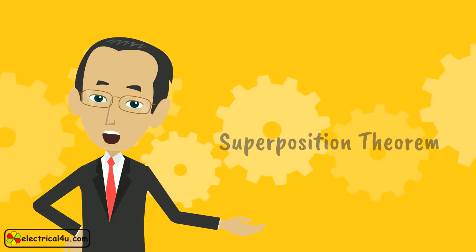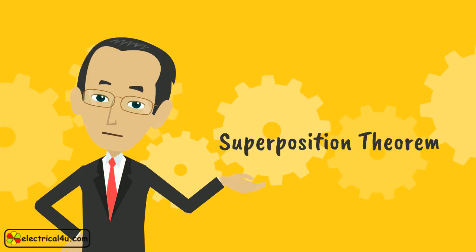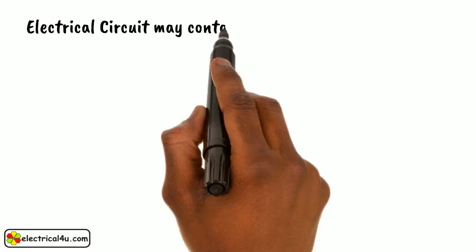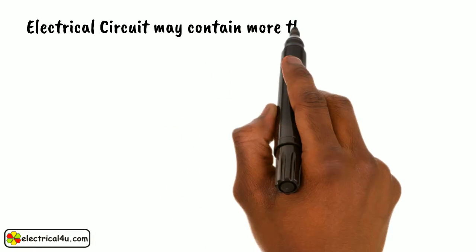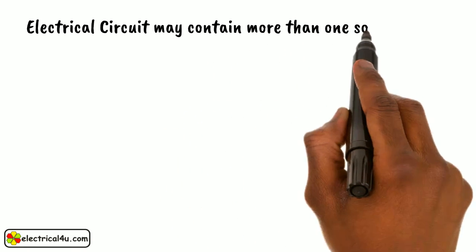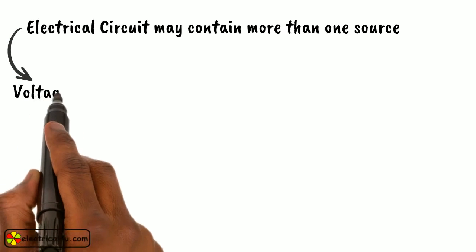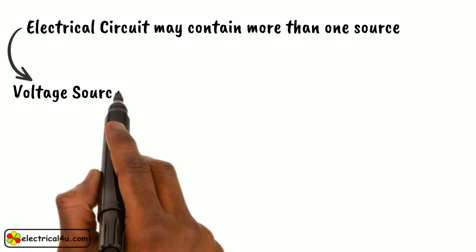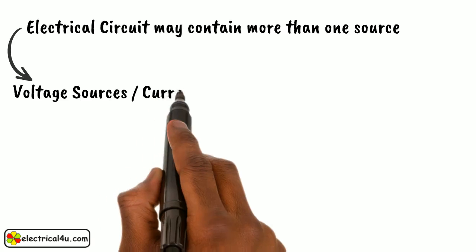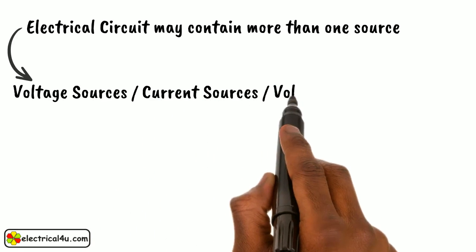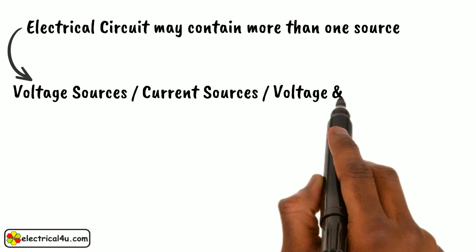Let us talk about Superposition Theorem. An electrical circuit does not always contain a single source of supply. It may contain more than one source of supply. The sources may be either voltage sources, current sources, or both voltage and current sources.